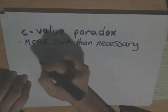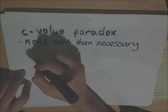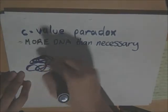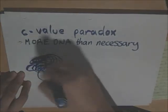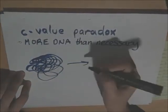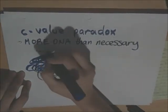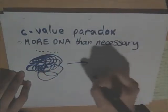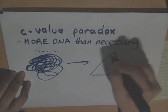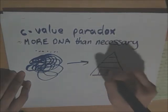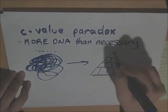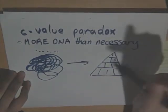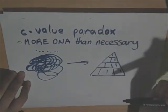It basically means that there's more DNA than necessary. If you can remember that, everything else will be pretty straightforward. The amount of DNA, so let's say this is all of the DNA that we have. Let's pretend we're bacteria. So, the amount of DNA that we have does not translate into the complexity. I'm going to draw a pyramid because they're complex. The amount of DNA that we have does not translate into the complexity of the organism.